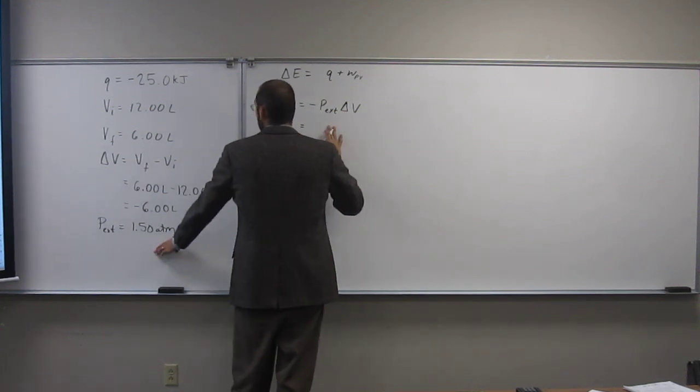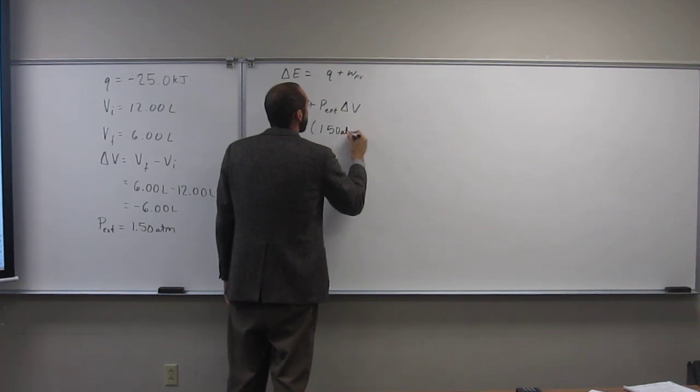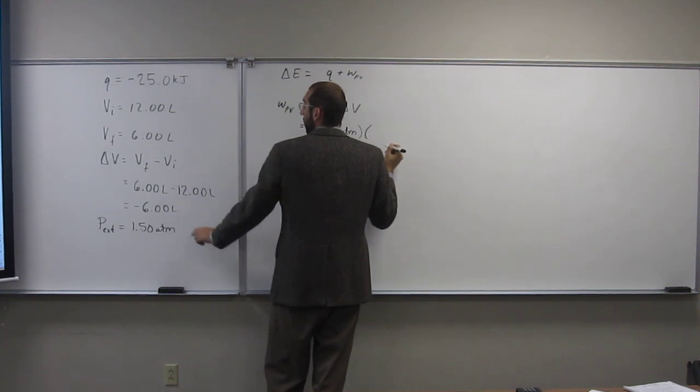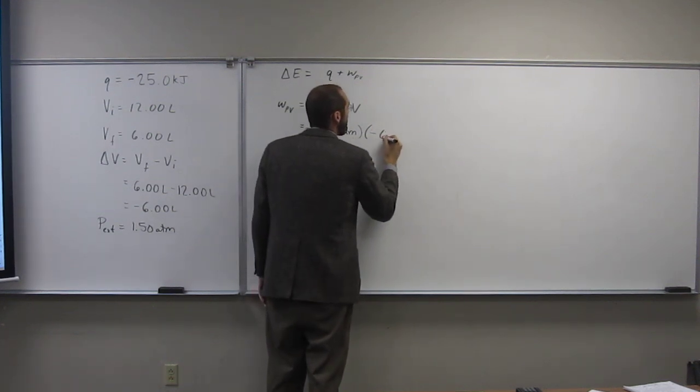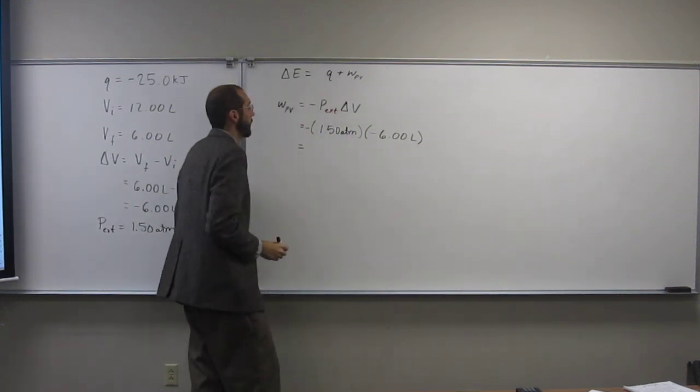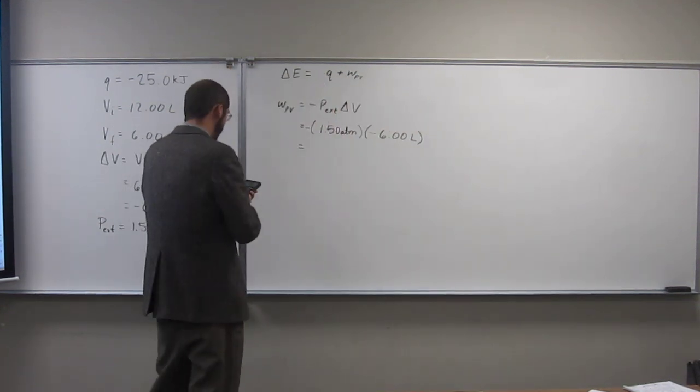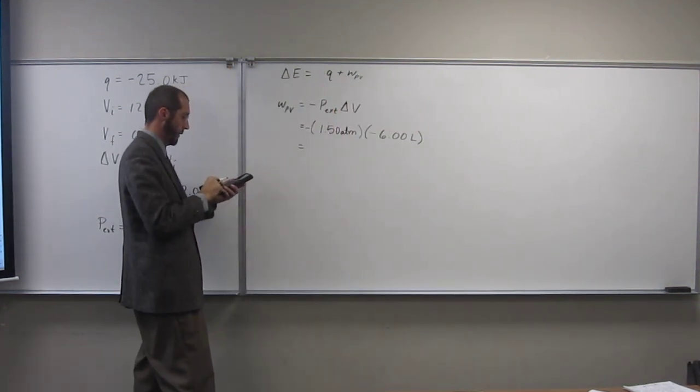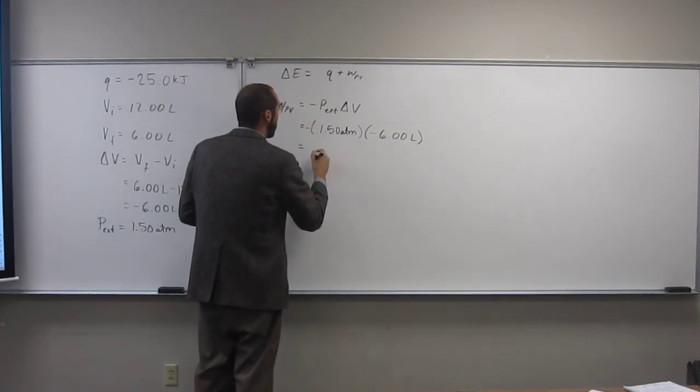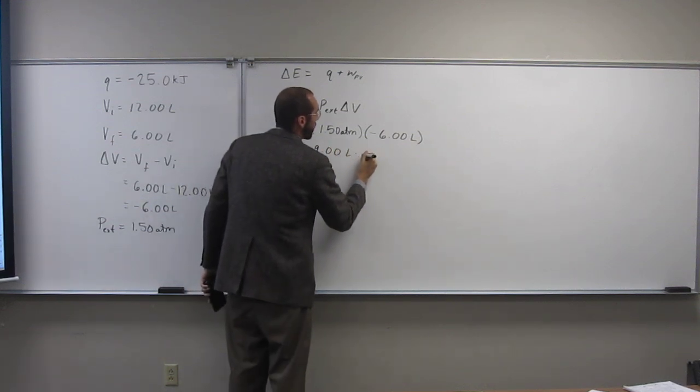So when we do this, we've got P external being 1.50 atm, and we've also got our change in volume as negative 6.00 liters. So 9.00 liters atm.